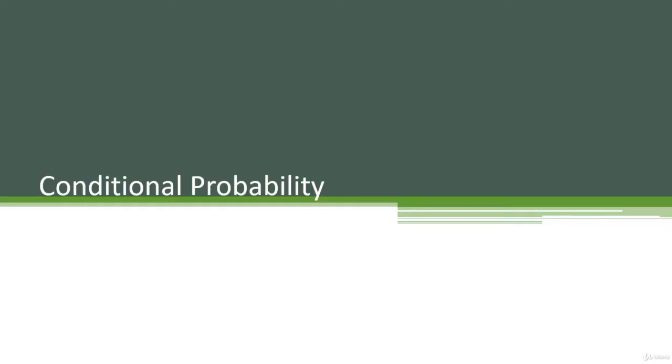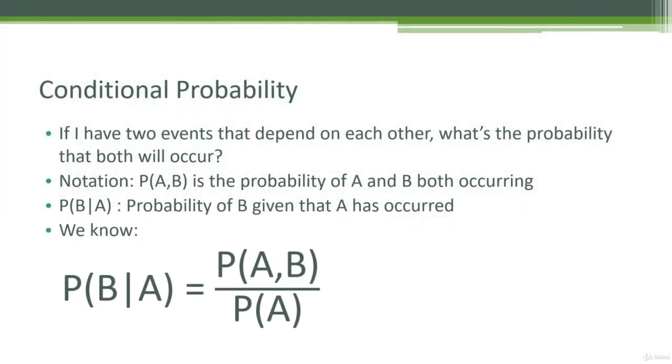The notation in conditional probability is probably the most confusing part, so we're going to walk you through it in this lecture. You might want to grab an extra cup of coffee or put on your thinking cap — this is one of the more challenging things to get through. With that, let's dive in, and I'll try to make it as simple as possible.